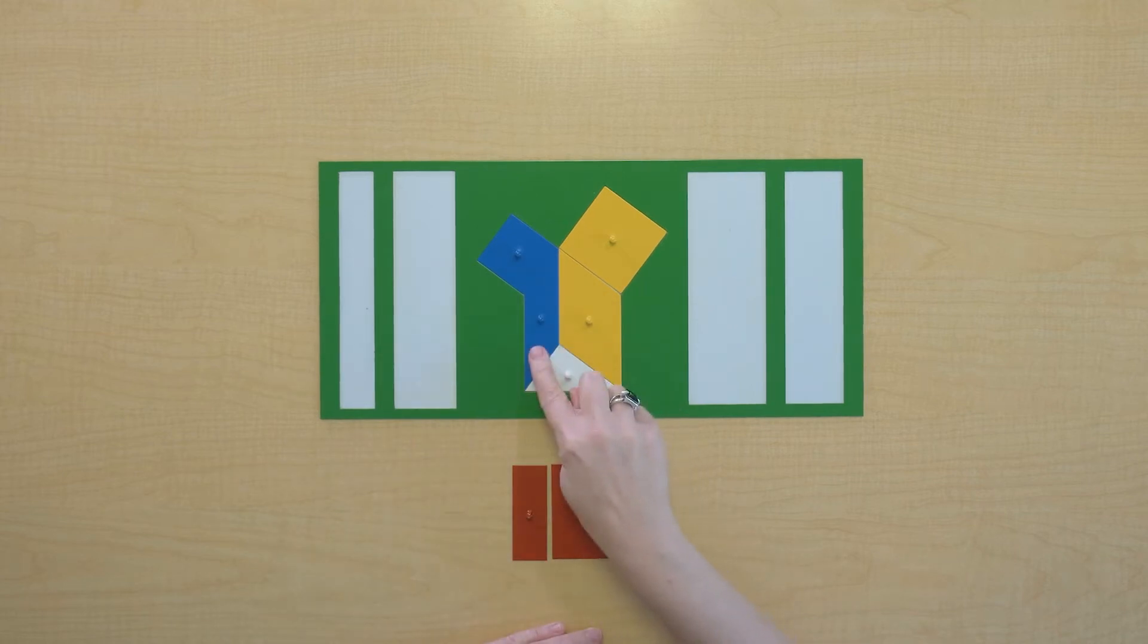So we can see that these two parallelograms do, in fact, take up the space left by our red square. We just had to do some moving to make that possible, but it takes up the space of the red square.